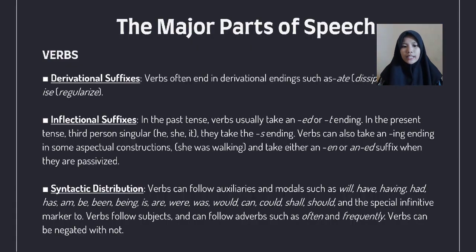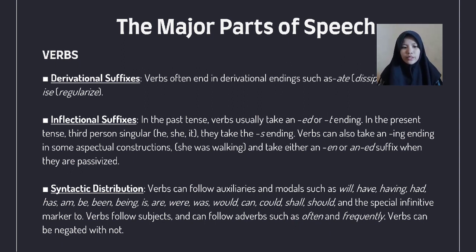The derivational suffix to form a verb includes endings such as '-ate' as in 'dissipate' and '-ize' as in 'realize.' Inflectional suffixes: in the past tense, verbs usually take an '-ed' or '-t' ending. In the present tense, third person singular — he, she, it — takes the '-s' ending. Verbs can also take an '-ing' ending in progressive constructions, for example 'she was walking,' and take either '-n' or '-s' suffix when they are passivized. Syntactic distribution: verbs can follow auxiliaries and modals such as 'will,' 'have,' 'having,' 'had,' 'has,' and 'be/been/being/is/are/were/was/would/can/could/should,' and the special infinitive marker 'to.' Verbs follow subjects and can follow adverbs such as 'often' and 'frequently.' Verbs can be negated with 'not.'